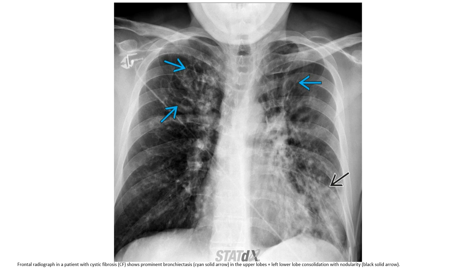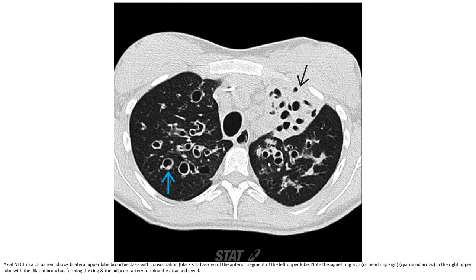Radiograph in a patient with cystic fibrosis showing prominent bronchial markings in the upper lobe plus left lower lobe consolidation with nodularity. This is a non-contrast enhanced CT in a cystic fibrosis patient showing bilateral upper lobe bronchiectasis with consolidation of the anterior segments of the left upper lobe. Note the signet ring signs in the right upper lobe with dilated bronchi forming the ring and the adjacent artery forming the attached signet.